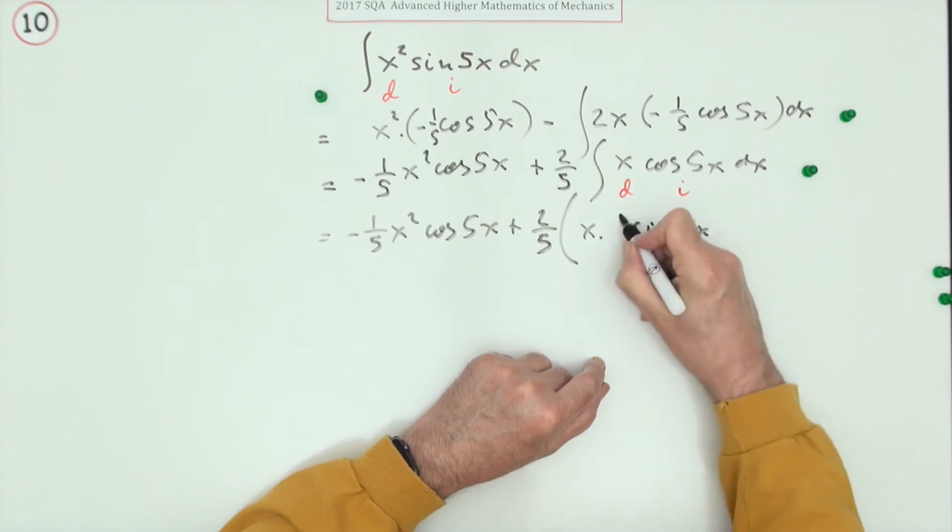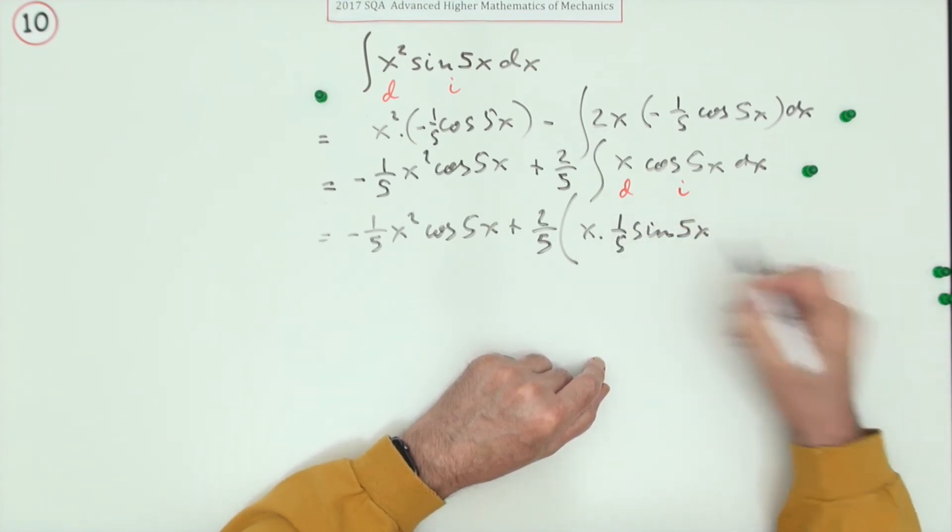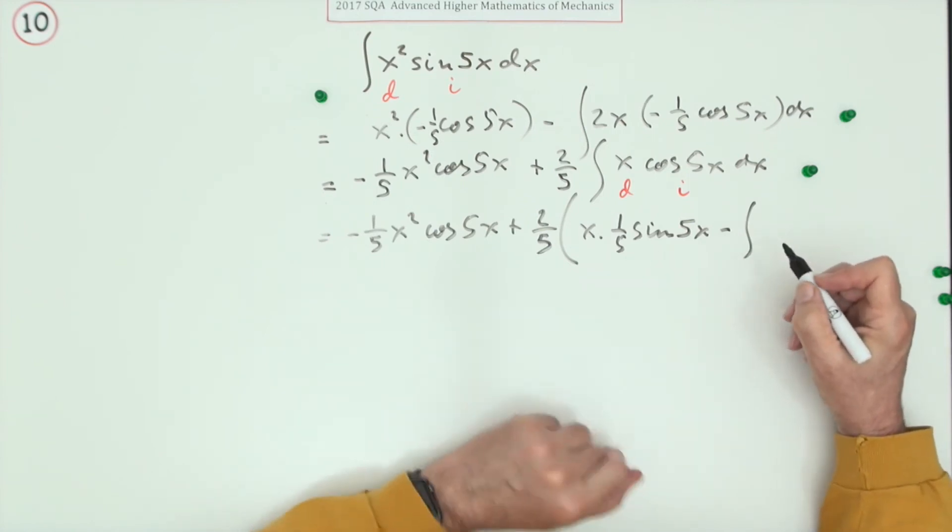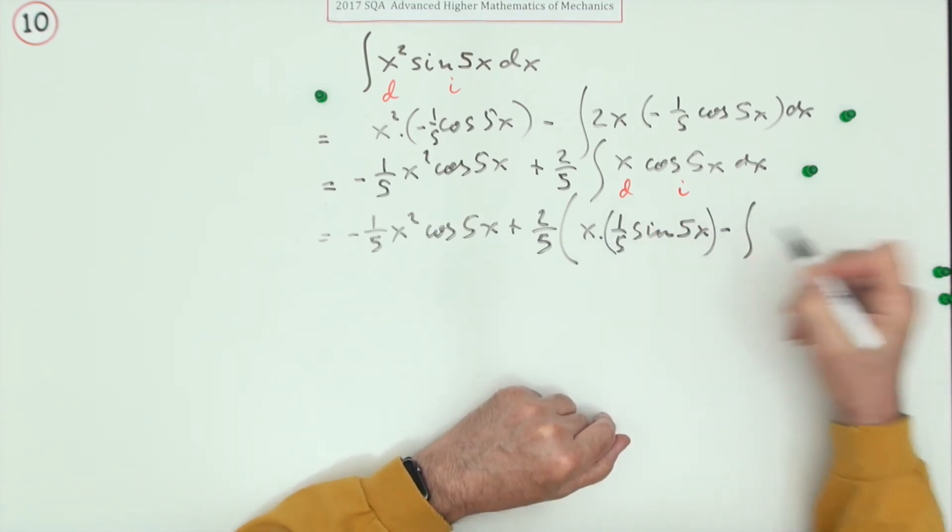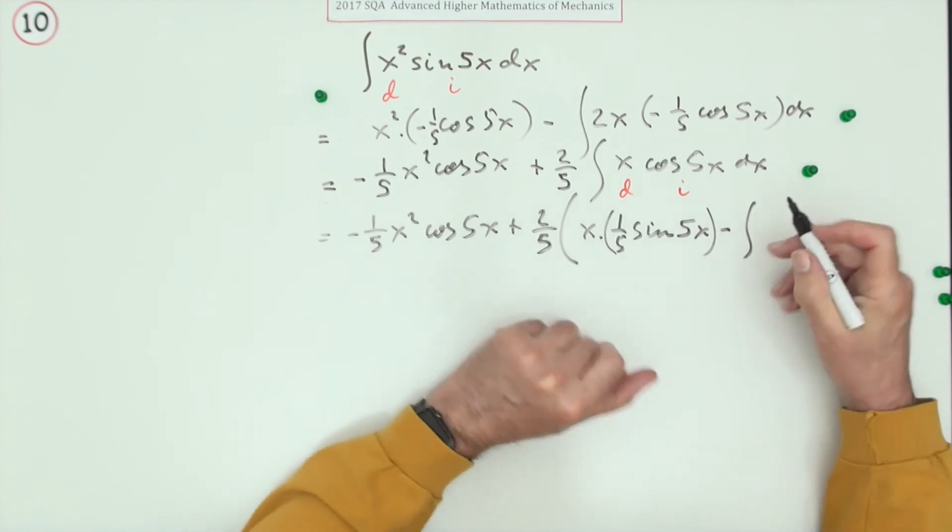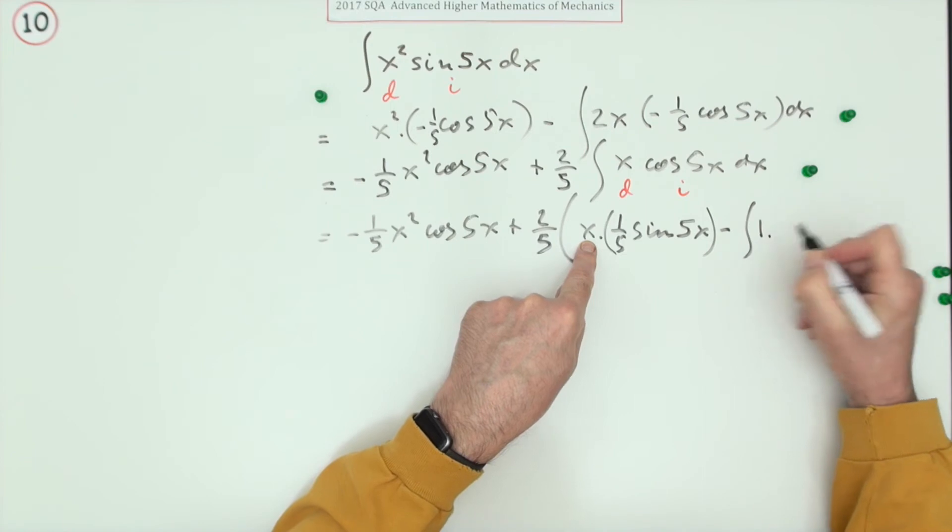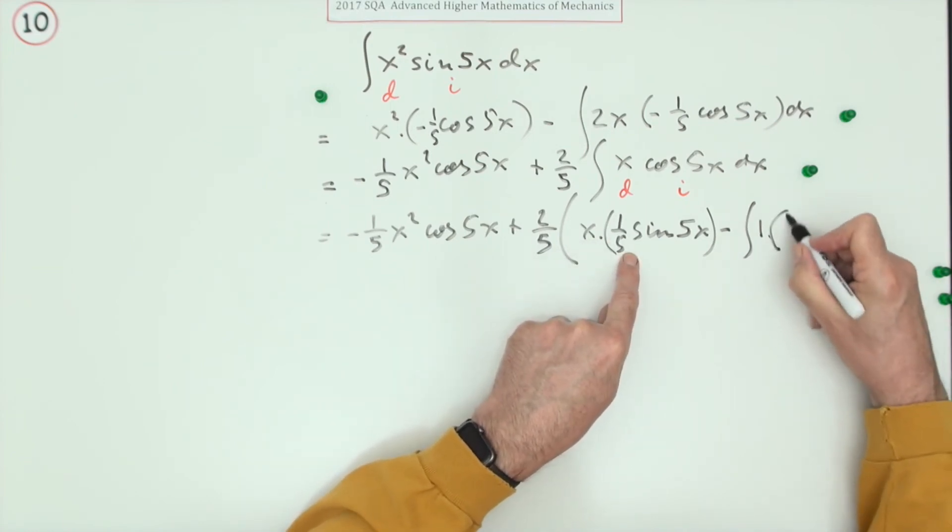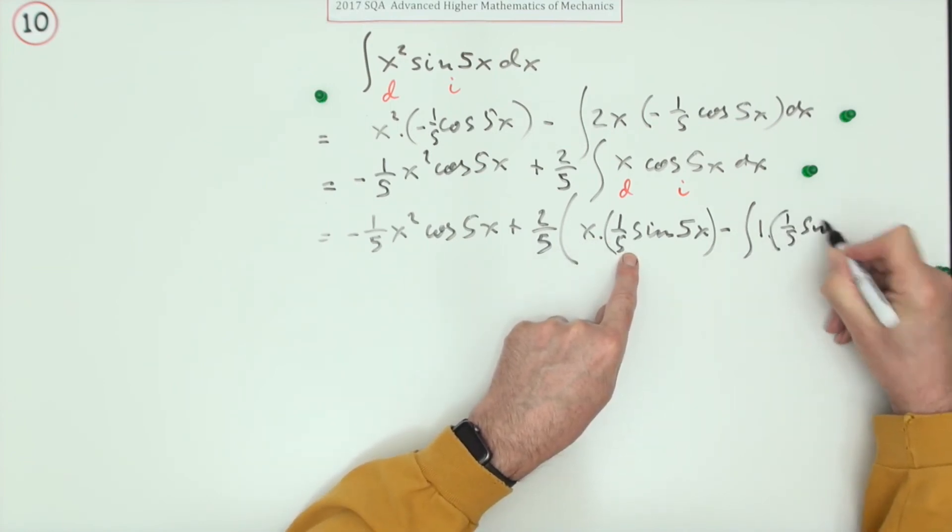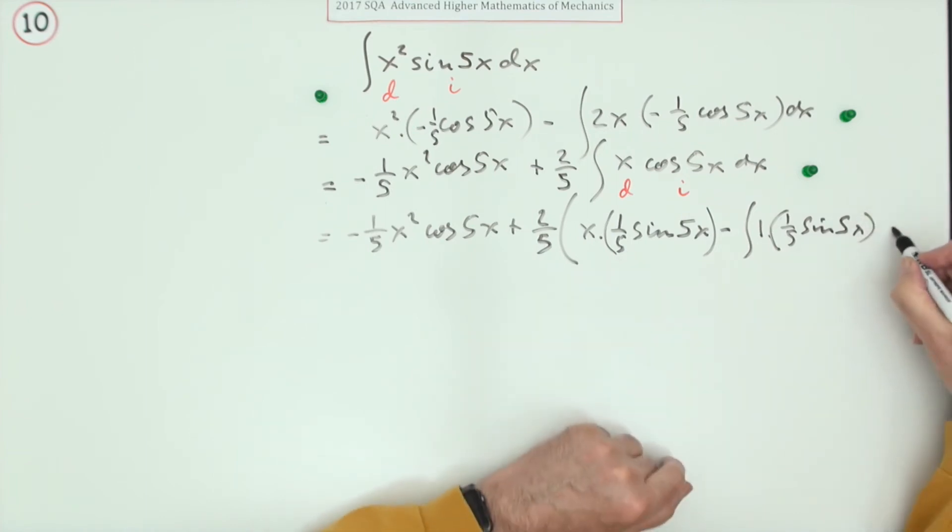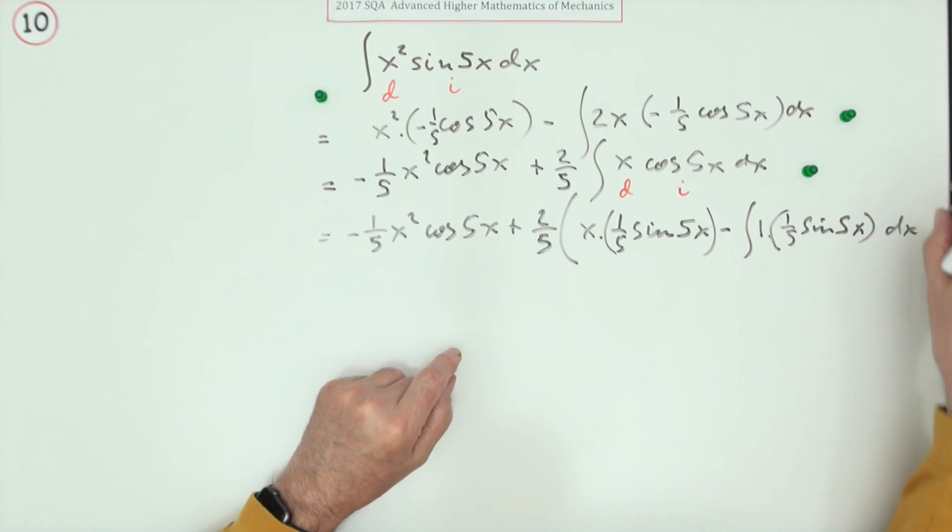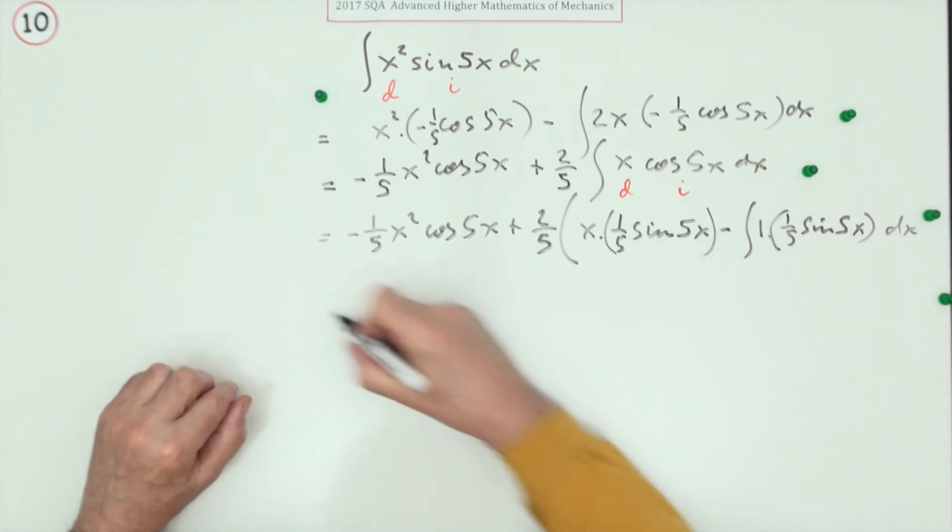Minus the integral of, now that's been done, we'll just emphasize it by putting it in these wee aesthetic brackets here. Now differentiate x and it'll go to 1, so one times, and that just stays the same, a fifth of sine 5x dx. That's the fourth mark. Now let's just tidy it all up.